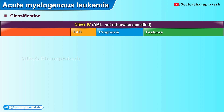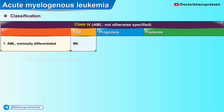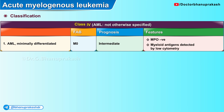The fourth category as per the WHO classification is acute myelogenous leukemia not otherwise specified. It is further subdivided into seven categories, with category 1 being minimally differentiated AML. It is classified as M0 by the FAB system with an intermediate type of prognosis, tending to be negative for myeloperoxidase, with myeloid antigens detected by flow cytometry.